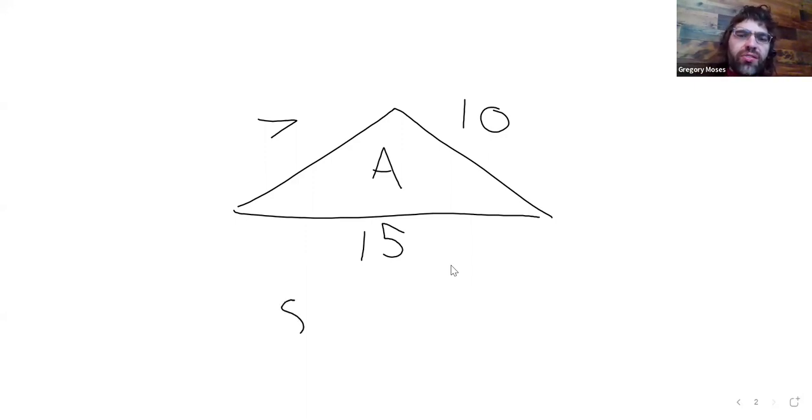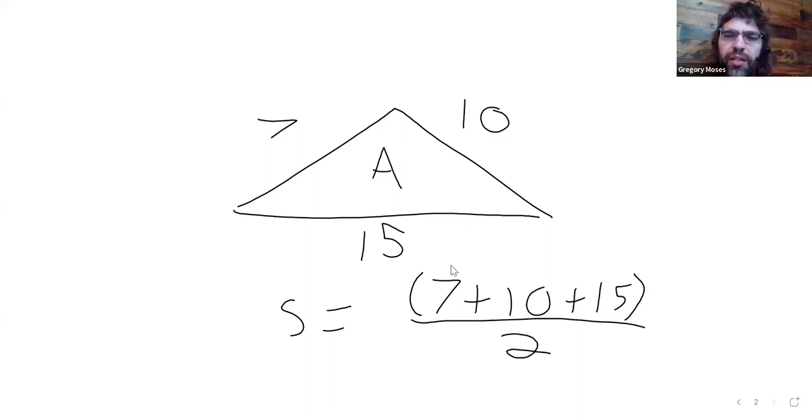We need S, which is 7 plus 10 plus 15, all divided by 2. So, let me see. 10 plus 15 is 25, plus 5 is 30, plus 2 is 32, divided by 2 is 16.